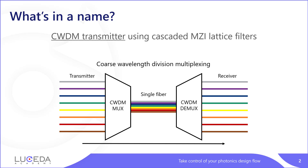The goal of a CWDM demultiplexer is to take all the incoming wavelengths carried over a single fiber or waveguide and split them into several channels with one wavelength per channel. Similarly, a multiplexer receives incoming wavelengths in separate channels and combines them into a single fiber or waveguide.